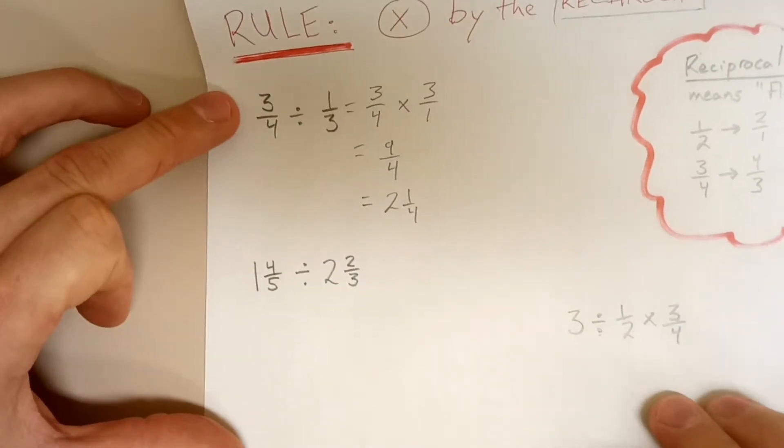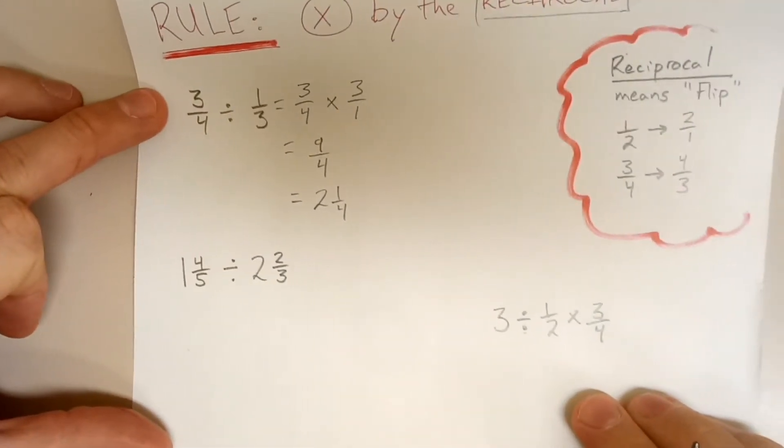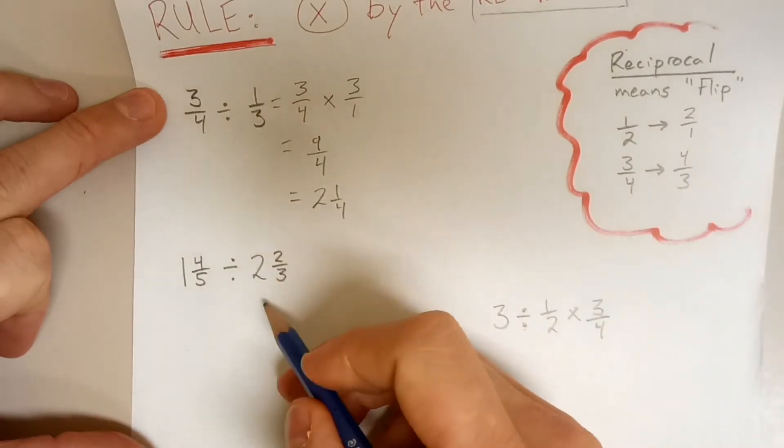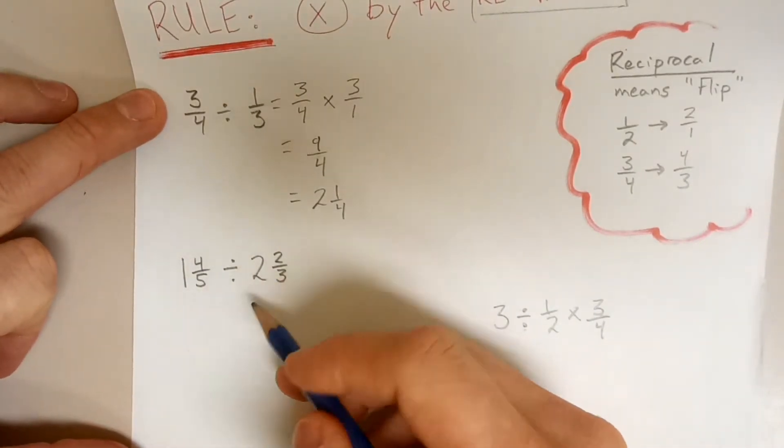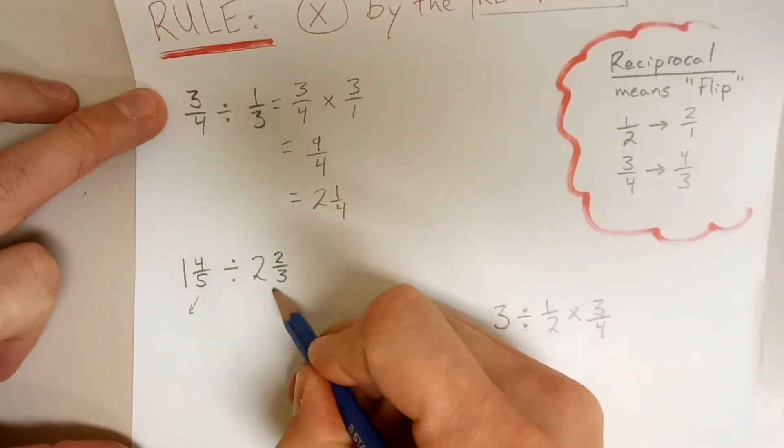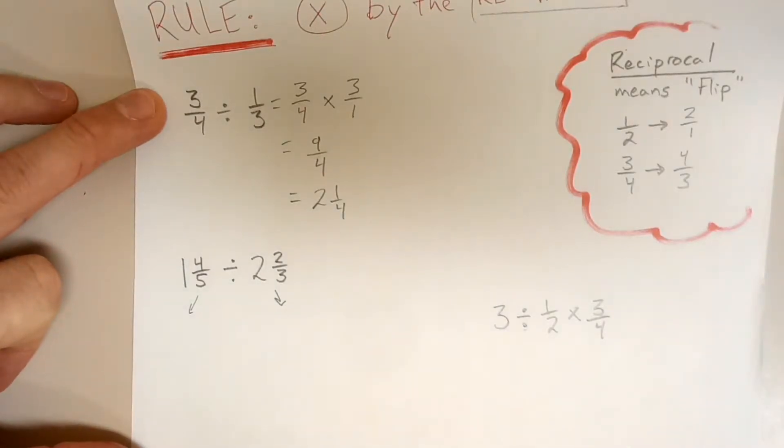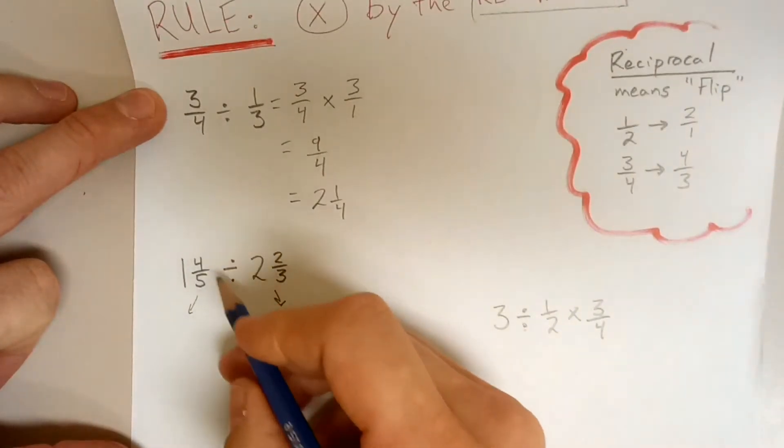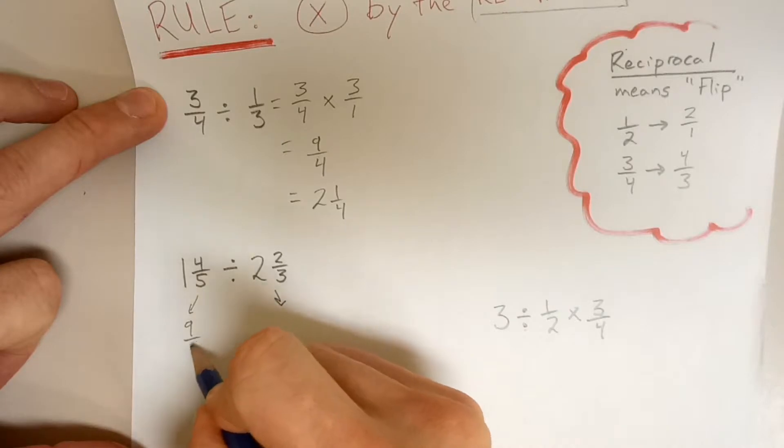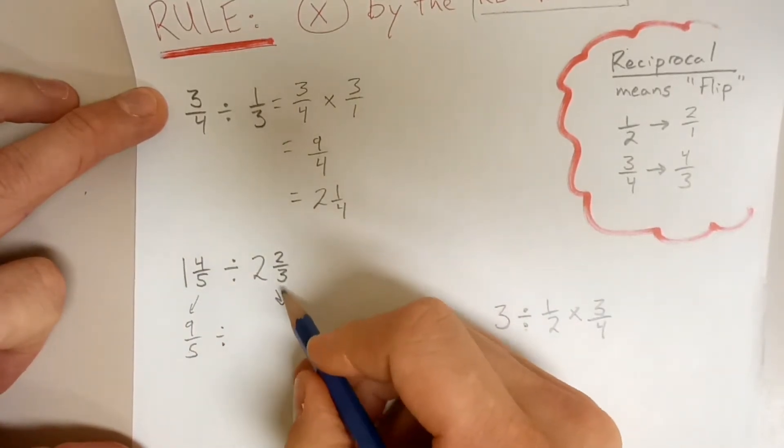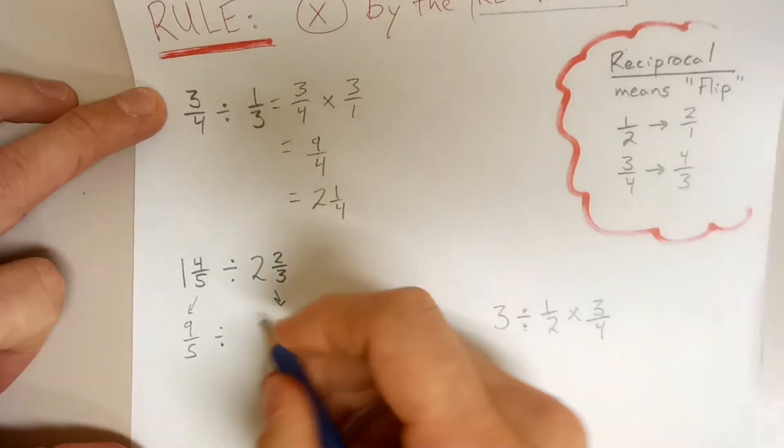Now a second example. When you have two mixed numbers, remember what we started the video with. First thing we have to do, just like when you're multiplying fractions, is convert them to improper. So this would be 9 fifths divided by 8 thirds.